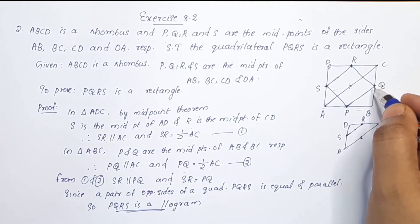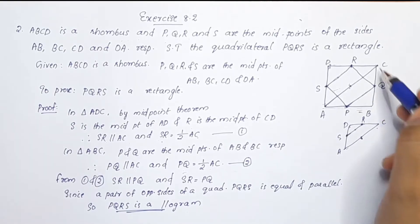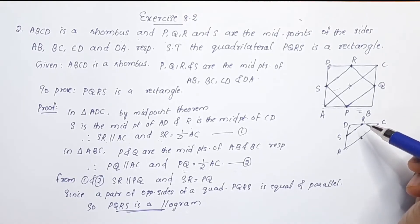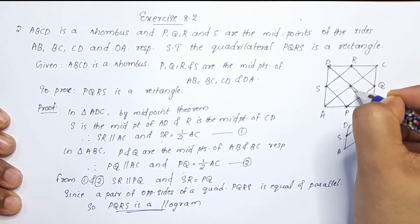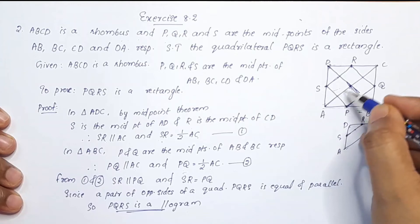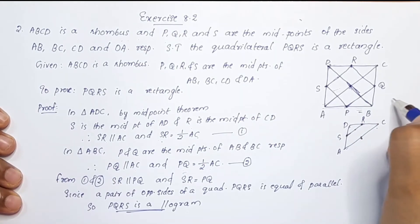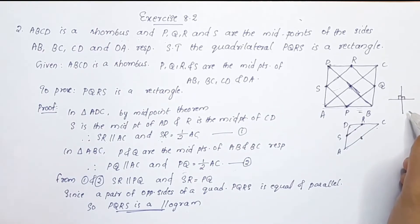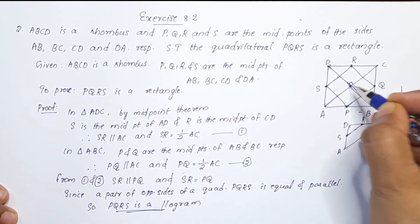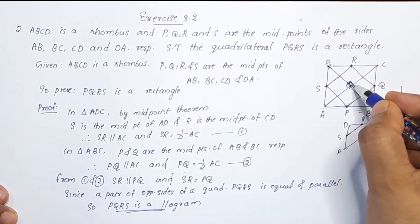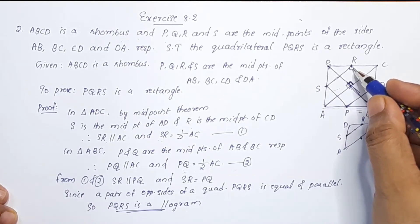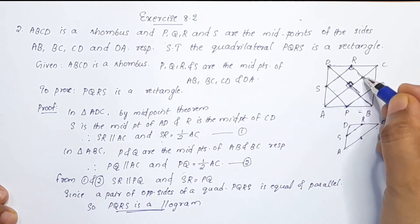Now we call this a rectangle. We need to show one angle is 90 degrees. In ABCD, the diagonals AC and BD are perpendicular bisectors of each other — the diagonals of a rhombus are perpendicular bisectors. So the angle between AC and BD is 90 degrees.